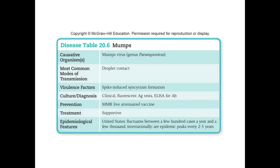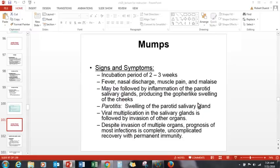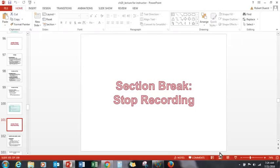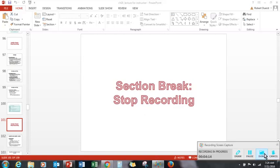To summarize: mumps is caused by the mumps virus, spread through droplet content of the saliva, and can be prevented with the measles, mumps, rubella vaccine. We don't focus on treating the virus specifically, but on treating the symptoms if it is contracted. If you have any questions, please feel free to shoot me an email or post them on the discussion board. Happy studies!